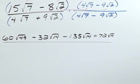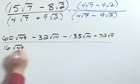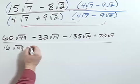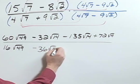And then for that denominator, my first will be 16 square root of 49. Outer minus 36 square root of 14.